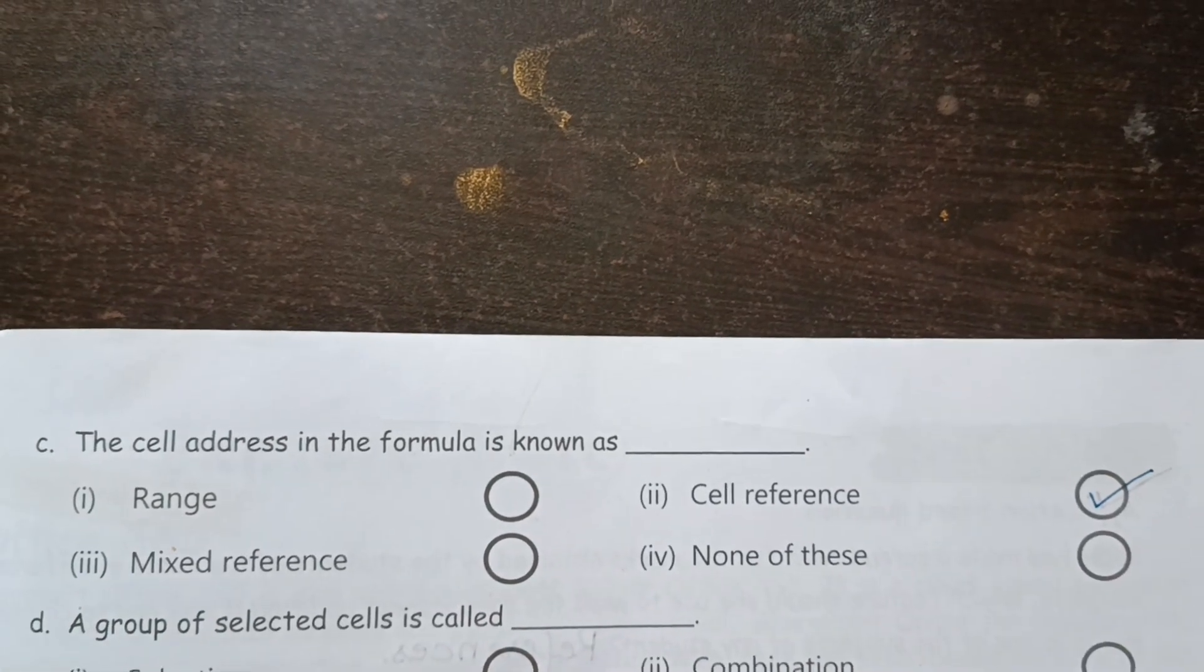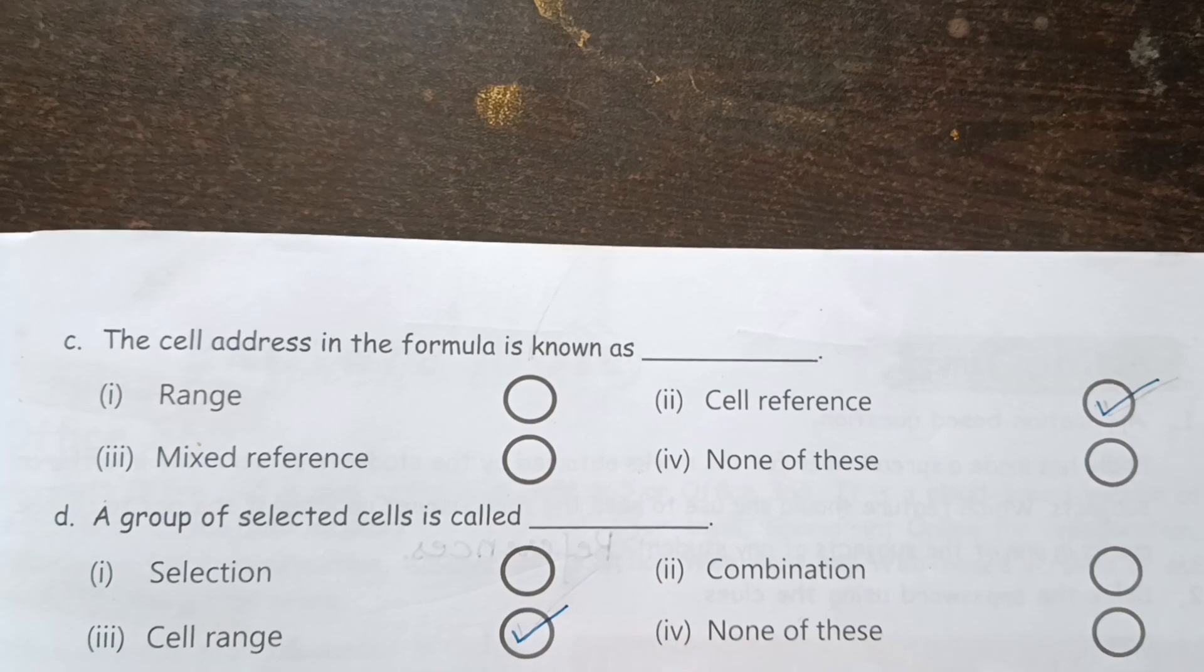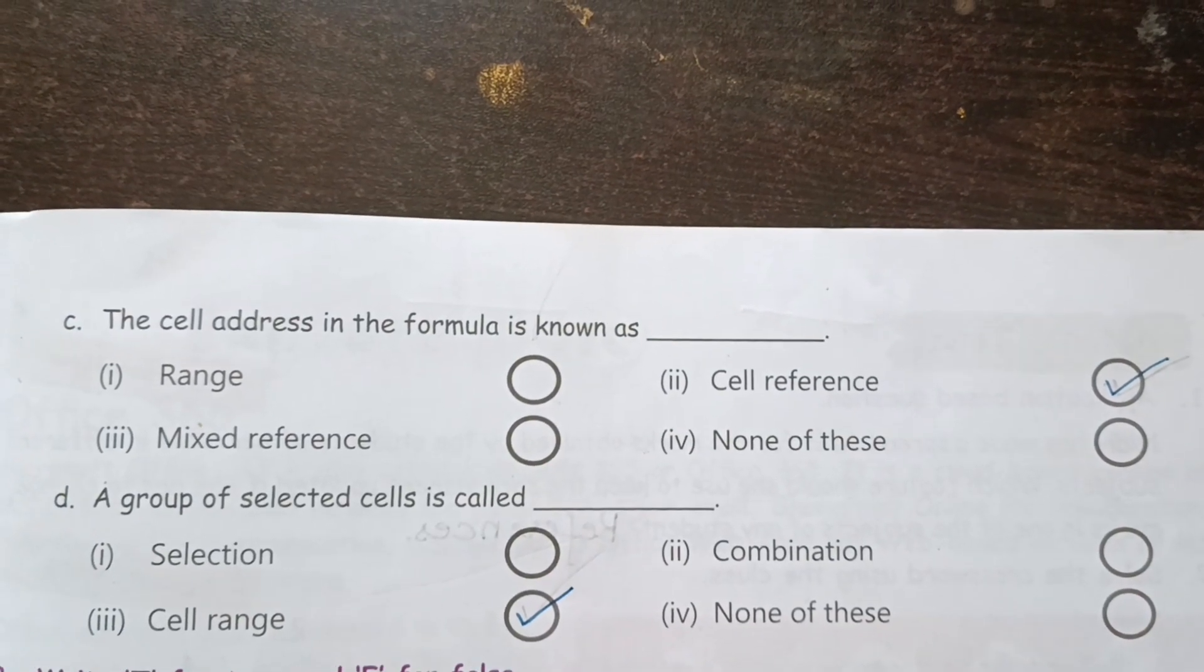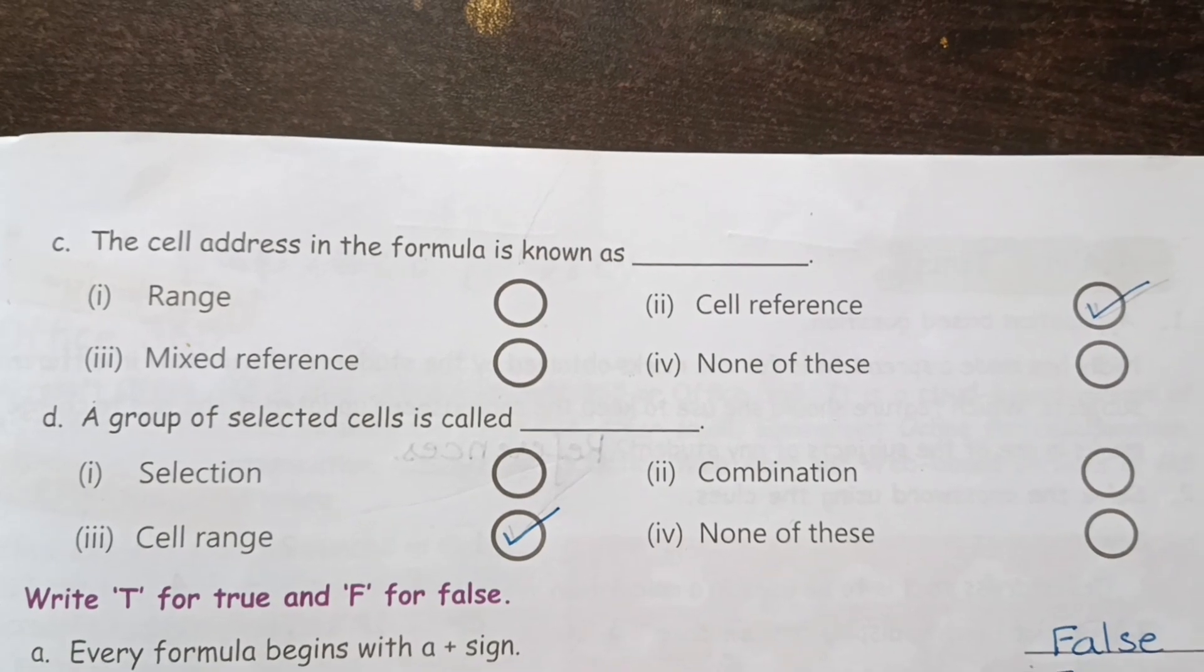Next, the cell address in the formula is known as cell reference. A group of selected cells is called cell range.